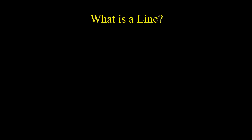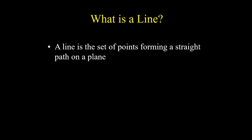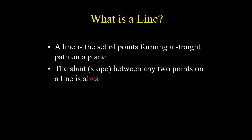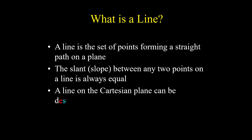What is a line? A line is the set of points forming a straight path on a plane. The slant between any two points on a line is always equal. A line on the Cartesian plane can be described by a linear equation.